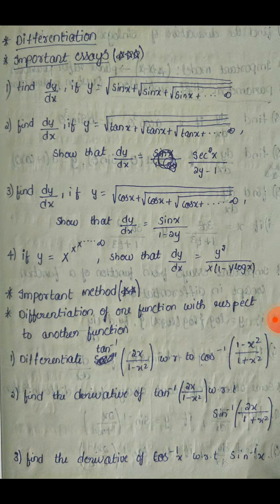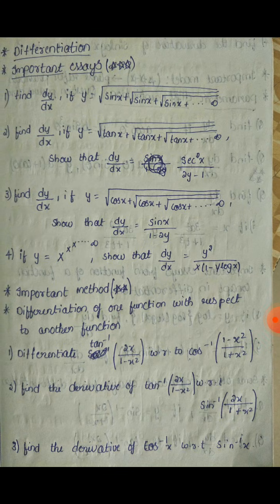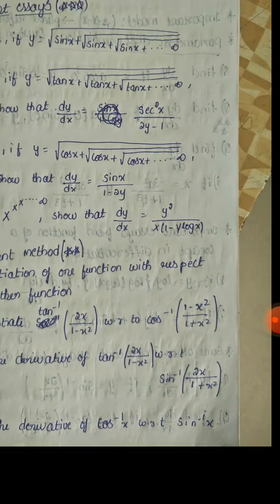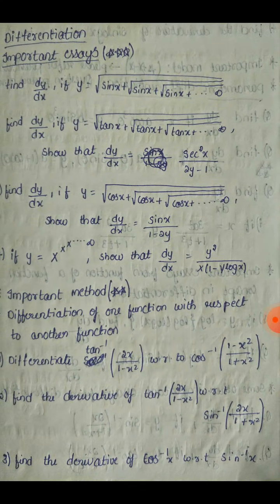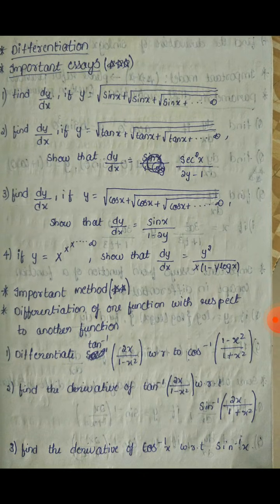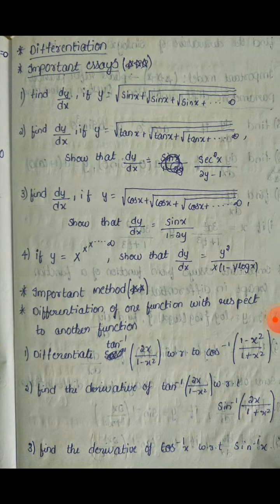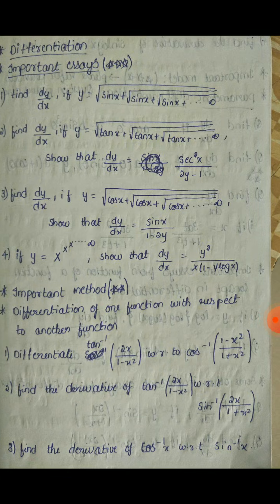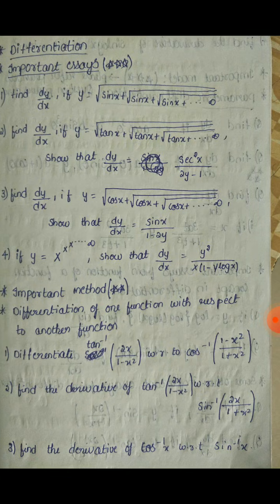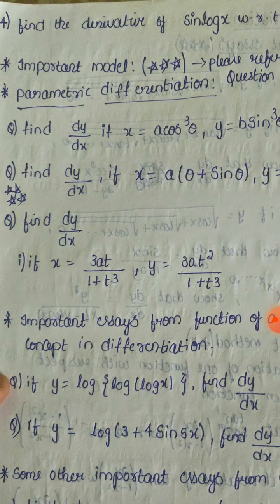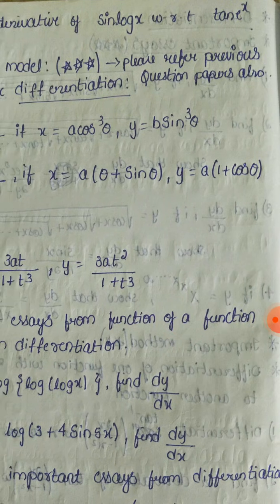Important sums for differentiation: differentiate tan inverse of (2x divided by 1 minus x²) with respect to cos inverse of (1 minus x² divided by 1 plus x²). Also find the derivative of tan inverse (2x divided by 1 minus x²) with respect to sin inverse. Then find the derivative of cos inverse x with respect to sin inverse x. Also: find the derivative of sin(log x) with respect to tan(e^x). These are important questions.